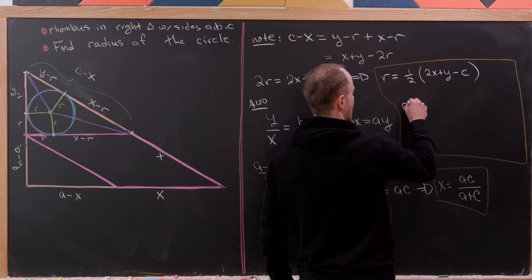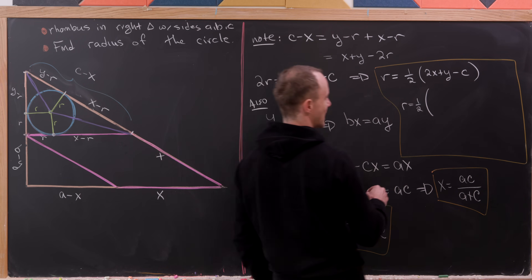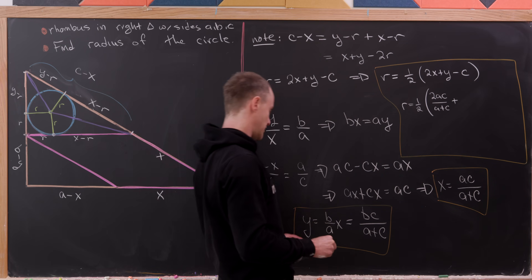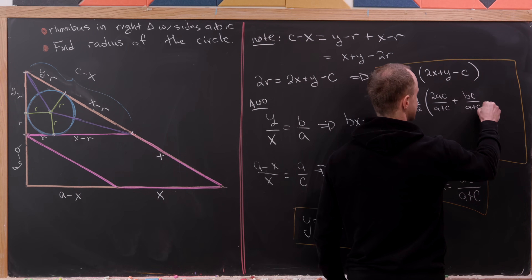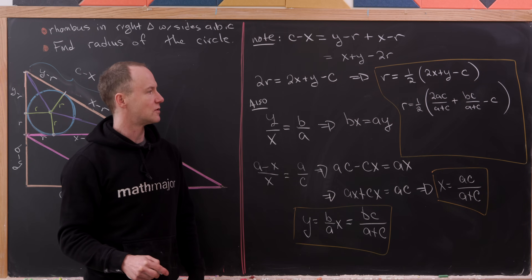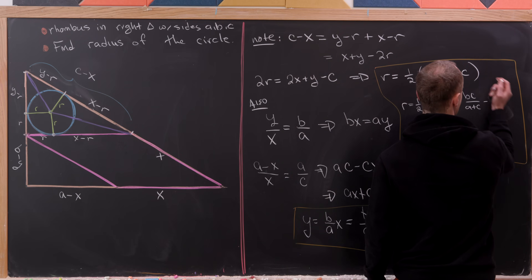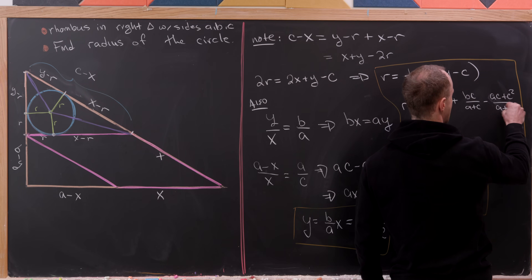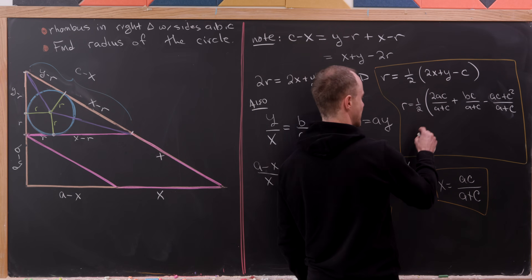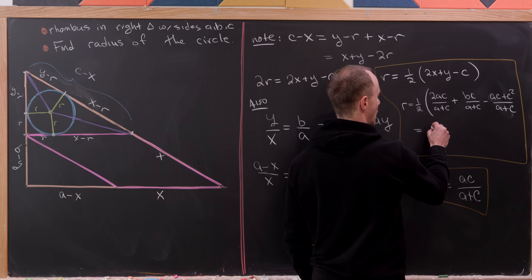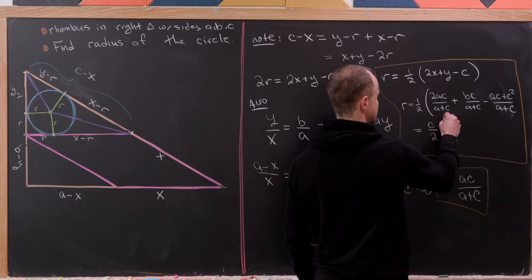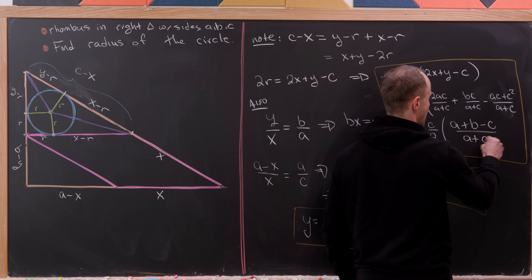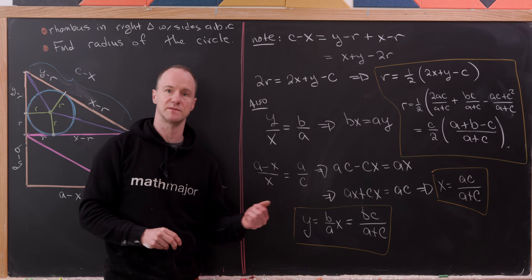Substituting into R equals one-half times (2X plus Y minus C): we get one-half times [2·(AC/(A+C)) plus BC/(A+C) minus C]. Giving C a common denominator of (A+C) replaces C with (AC + C²)/(A+C). Combining everything and factoring out C from the numerator yields the final answer: R equals C times (A plus B minus C) divided by 2 times (A plus C). That's the radius expressed purely in terms of the triangle's side lengths.